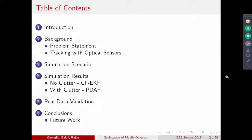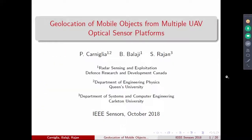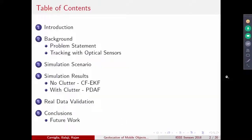The talk is on geolocation of mobile objects from multiple UAV optical sensor platforms. The previous speaker spoke about the device. Now I'm going to talk about the systems, mostly at the system level. The talk is roughly into six topics: a brief introduction, background on how things are generally tracked, some simulation scenarios with and without clutter, real data validation, then I conclude.